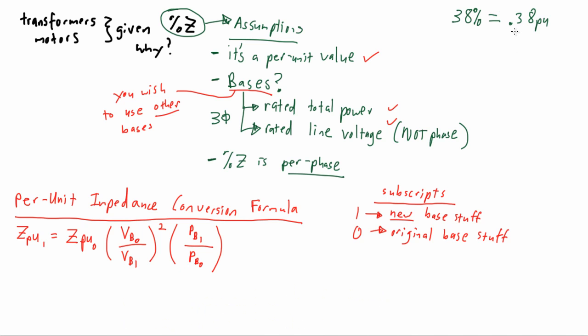So let's see this formula in action with some real numbers given. We'll use what we set up here as the 38% impedance value in our formula. Let's set up the voltage and the power bases. So let's say our original voltage base will be 480V, and our original power base will be 3 KVA.